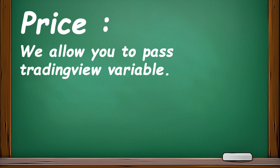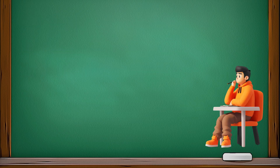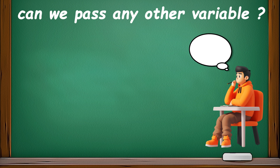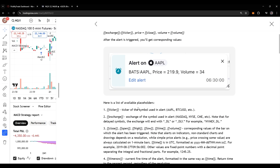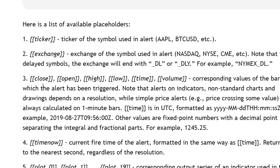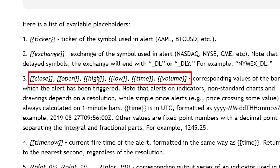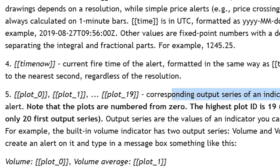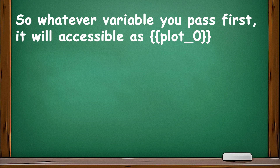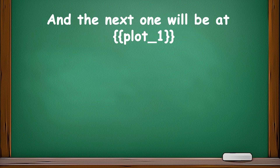For price, we allow you to pass your TradingView variable. Some people ask if they can pass any variable. You cannot pass any other variable. According to their documentation, only specific variables are allowed. You can only pass from plot_0 to plot_19, and you have to make changes in your Pine Script to add the plot. Whatever variable you pass first will be accessible as plot_0, and the next one will be at plot_1.